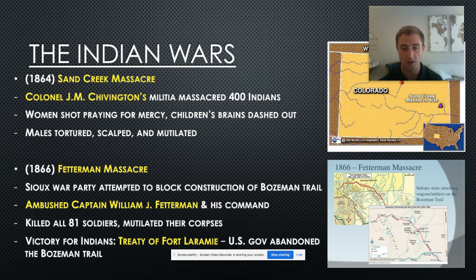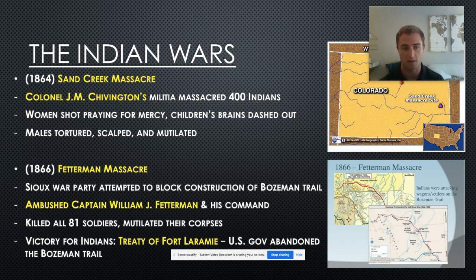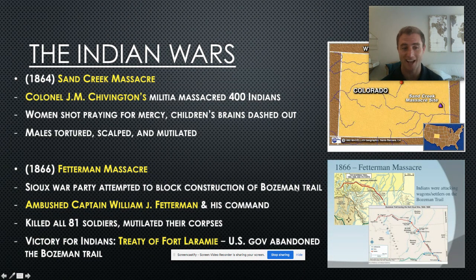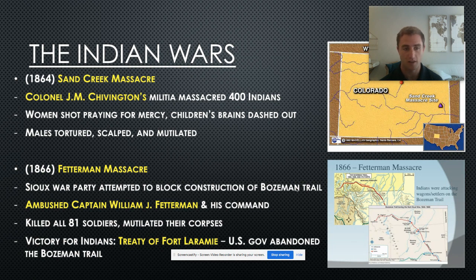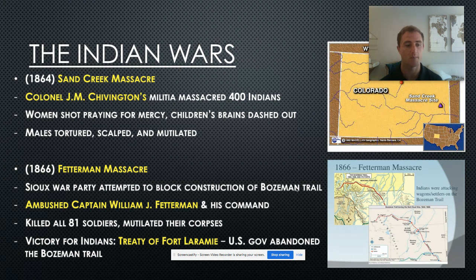As a result of Sand Creek, Native Americans felt they were going to be attacked and struck back. The Sioux struck back in 1866 with the Fetterman Massacre, where Native Americans ambushed Captain Fetterman and his army. What was happening was the U.S. government was attempting to construct the Bozeman Trail — a trail leading into Montana, which had just experienced a gold rush. Obviously, since it was part of an Indian reservation, the Indians weren't happy about this. The Sioux fought back and were victorious, and the resulting Treaty of Fort Laramie had the U.S. government ban the Bozeman Trail.